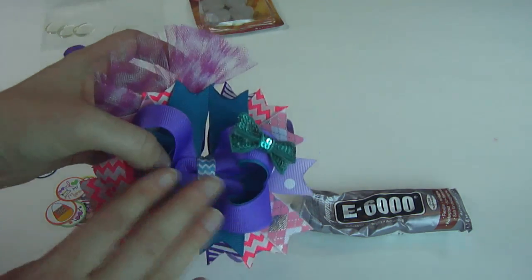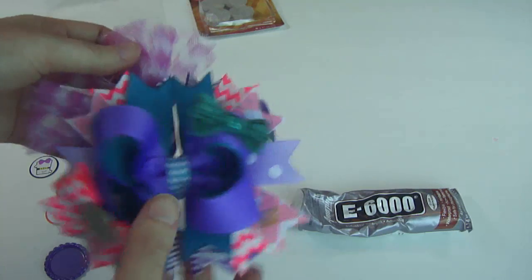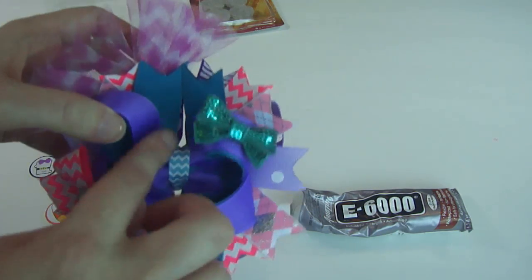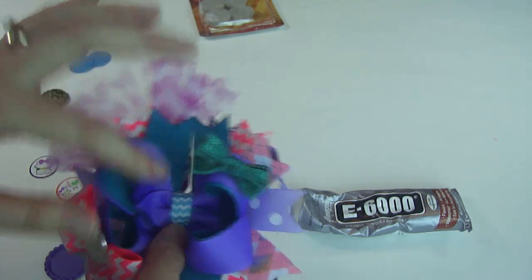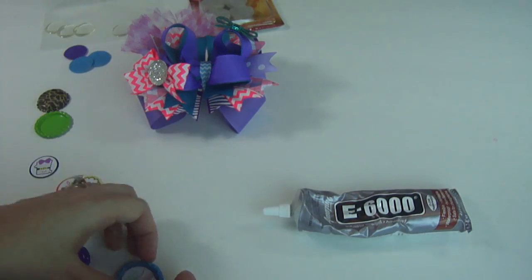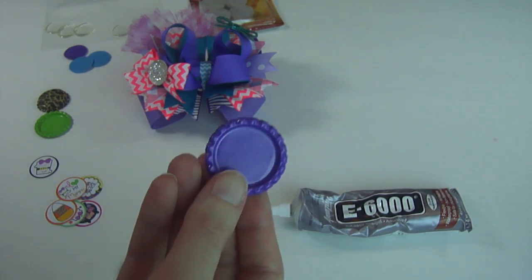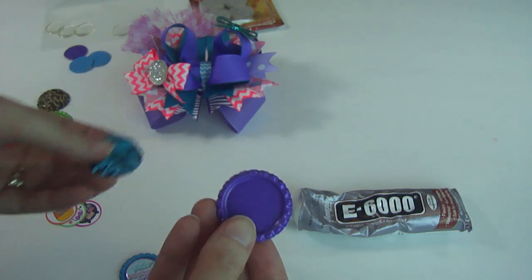But you will need your hair bow, and what I do is I go ahead and wrap my hair bow to my clip with my ribbon, my 3/8 inch ribbon. Go ahead and just complete your bow as if the bow is complete. Now we're just going to add the bottle cap to the center. You'll need bottle caps, of course, and you can get the flat bottle caps or the regular bottle caps. It doesn't matter. It's just your preference.